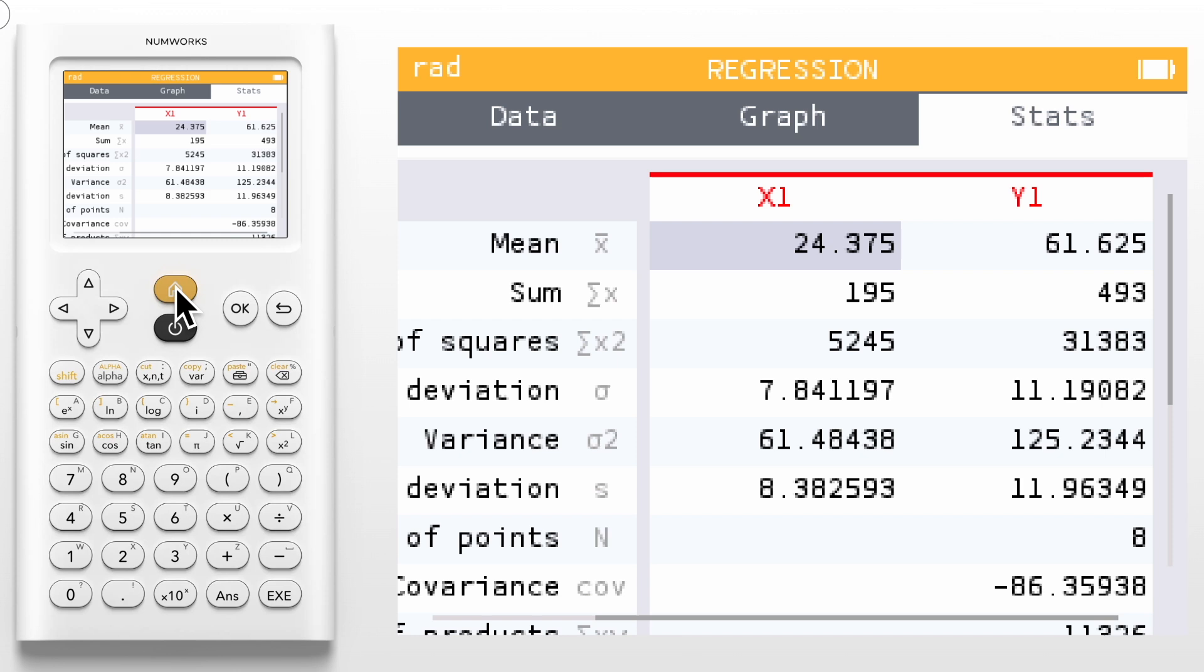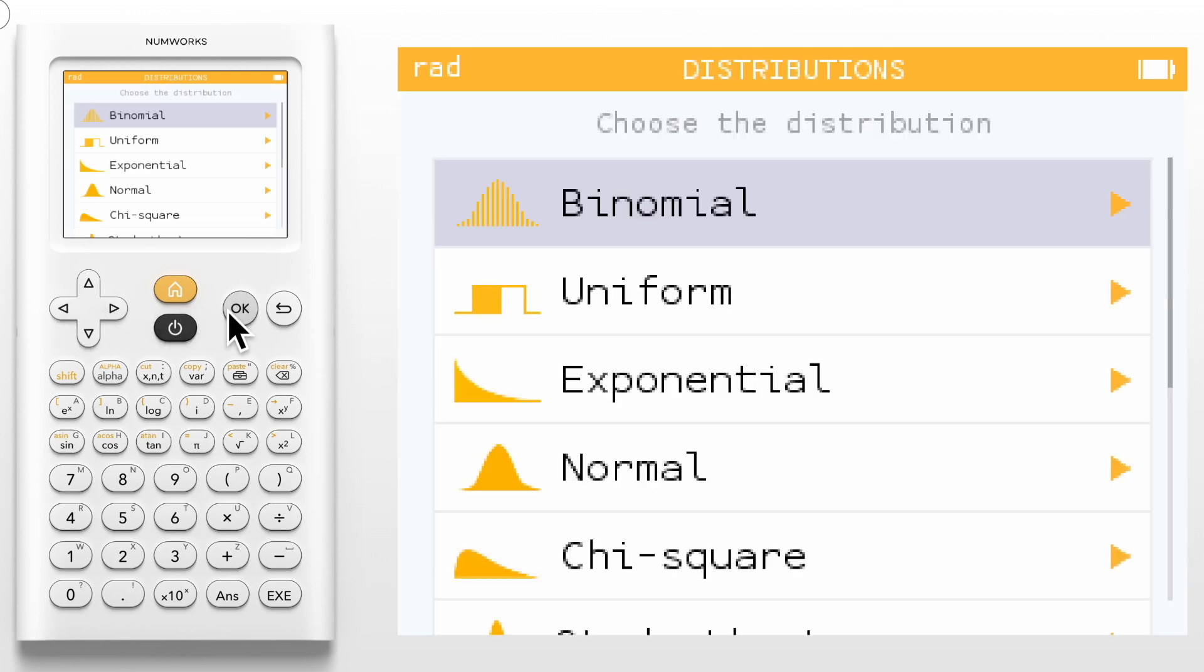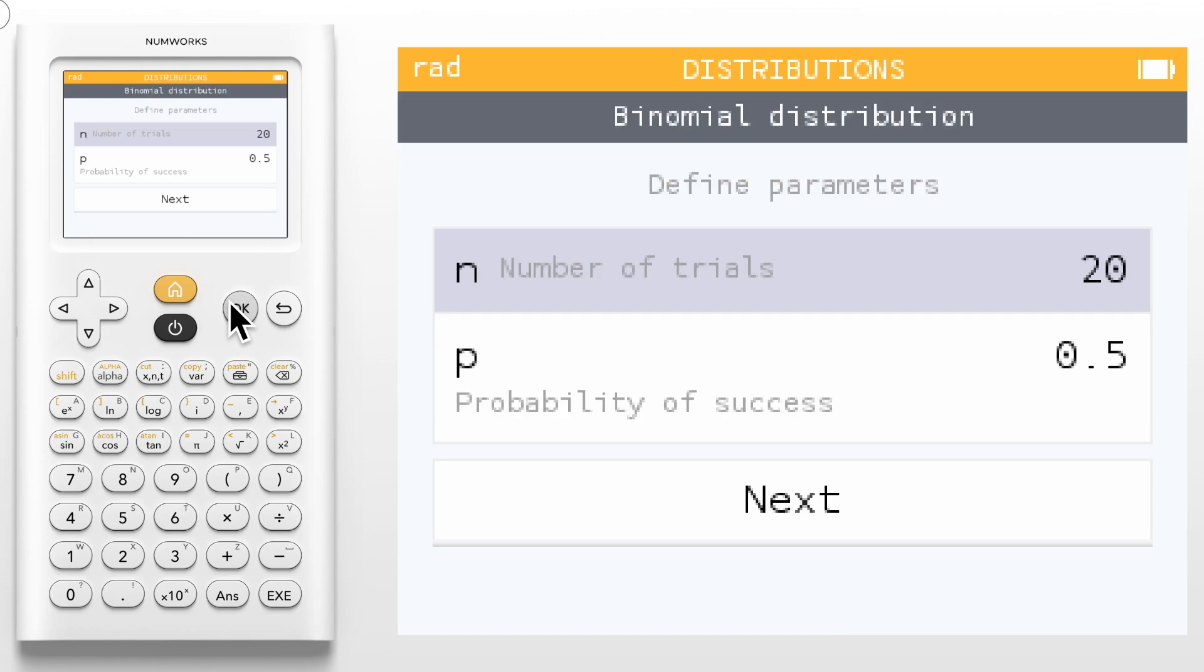We will now return to home and move to the distributions app, where we will see a list of several probability distributions including the binomial, normal, chi-squared, students t, and geometric distributions. Let's select the binomial distribution. Once the distribution has been selected we need to enter its relevant parameters. For the binomial distribution that includes the